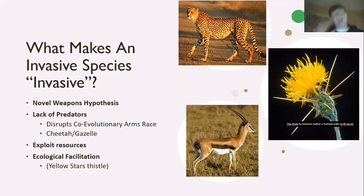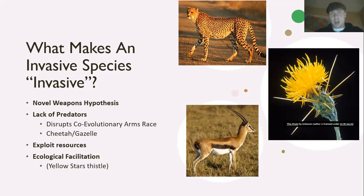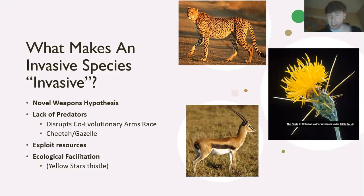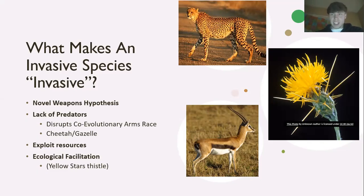That is why I'm basing my information on something called the Novel Weapons Hypothesis — basically a theory where invasive species, when they enter a new environment, create negative consequences. By basing it on this, scientists who might disagree can't fault my framework. There are also two or three other ways that help species entering a new environment become more prominent, or become identified as 'invasive.' The first is the lack of predators.